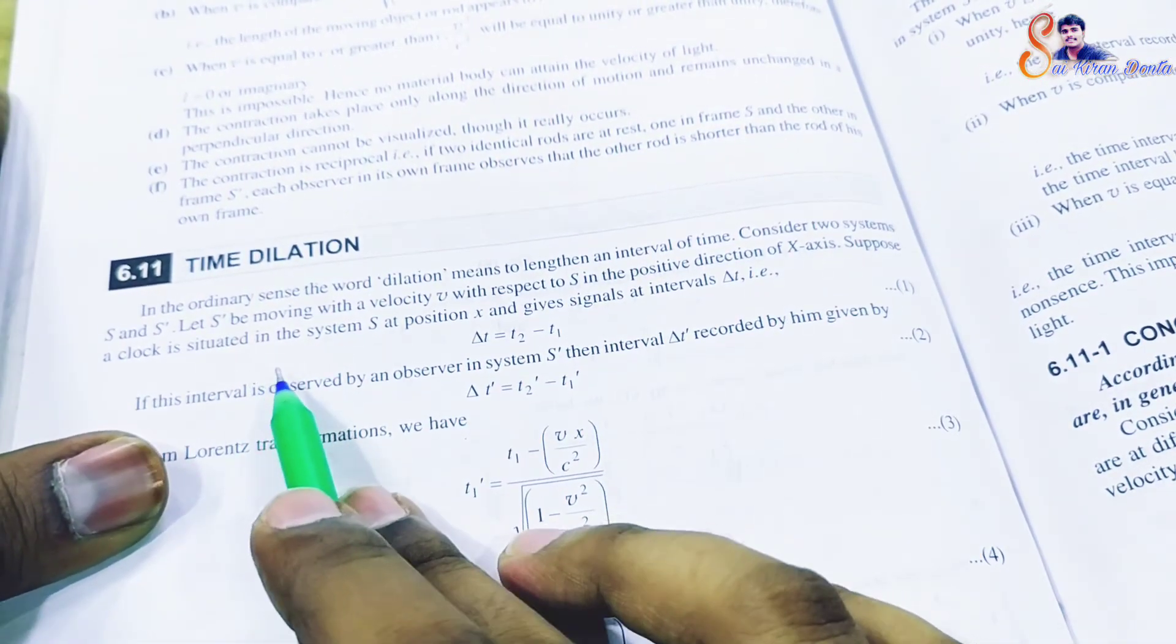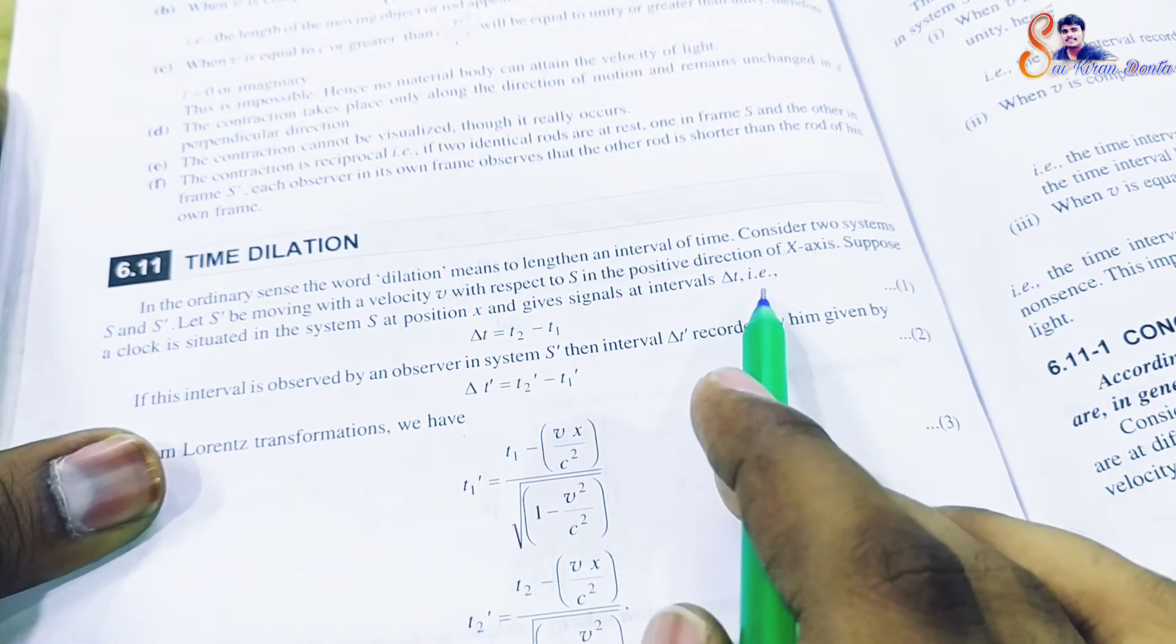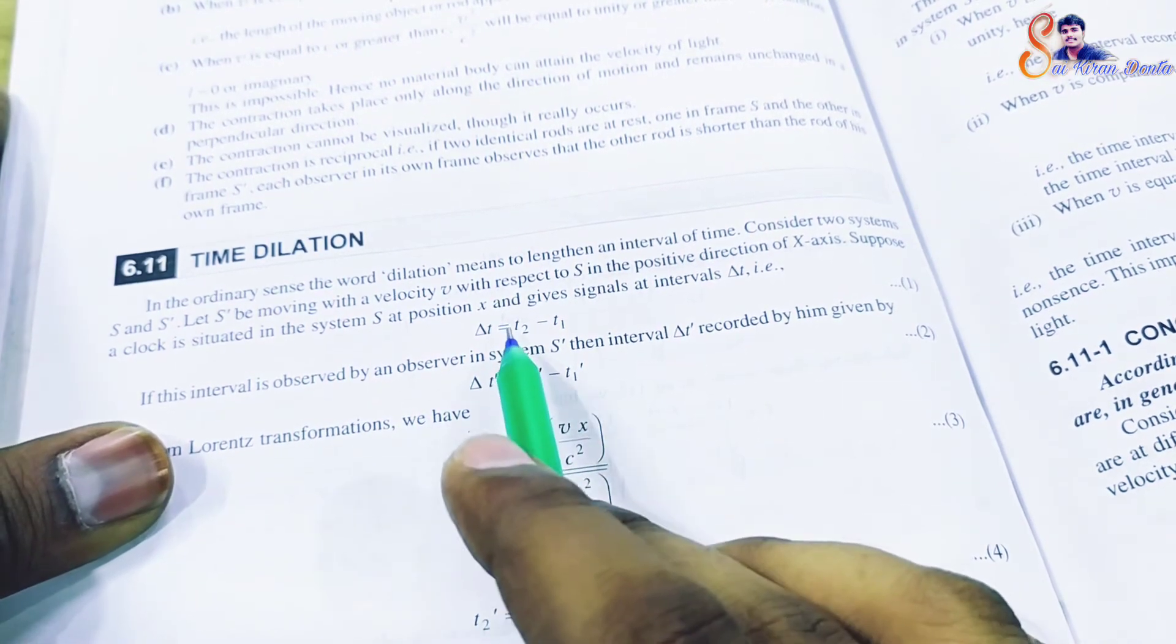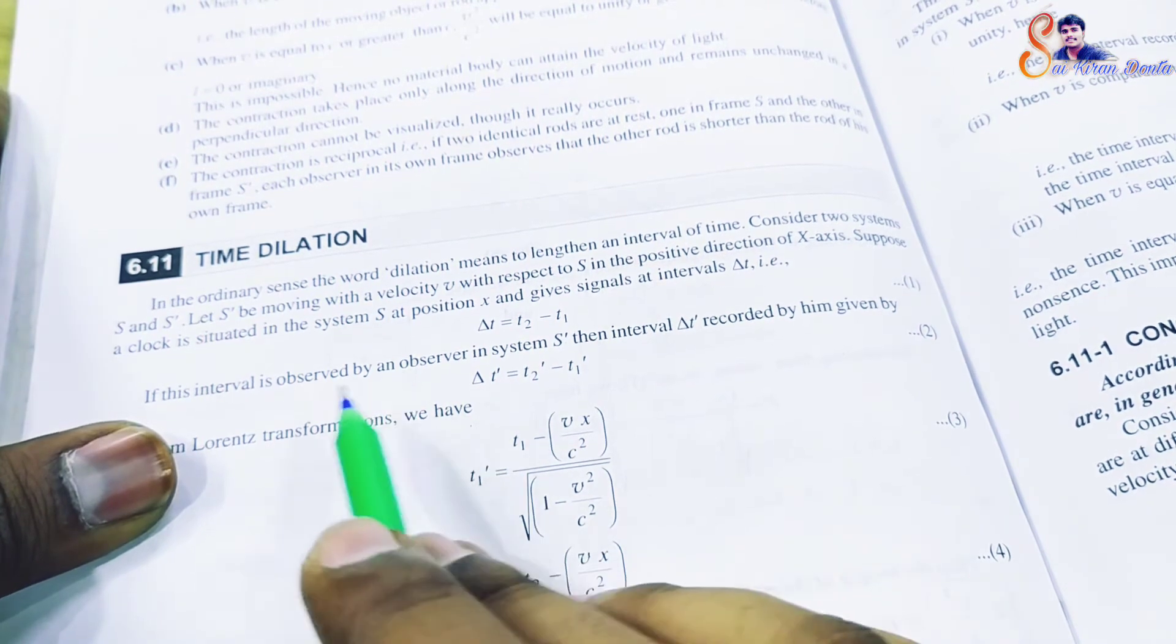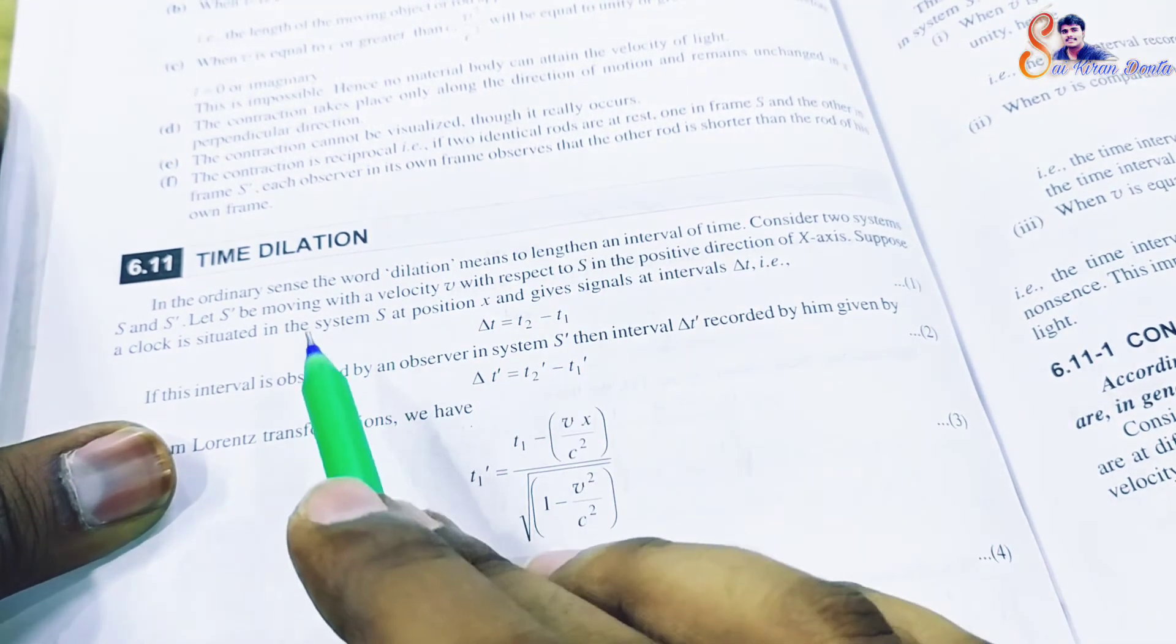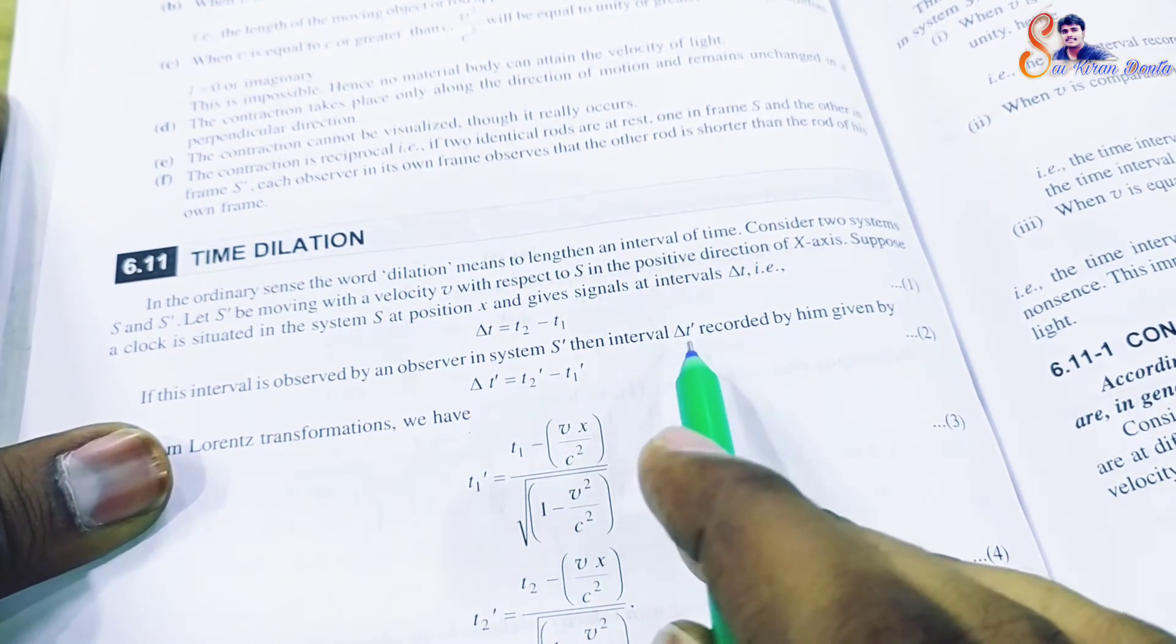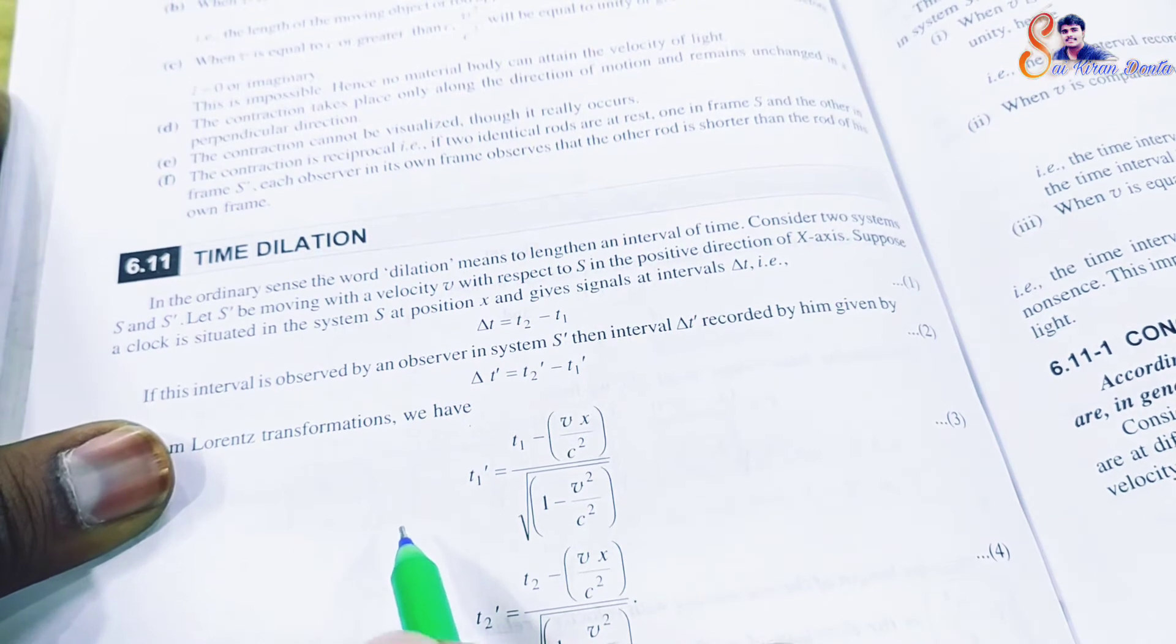Suppose a clock is situated in system S at position x and gives a signal at intervals delta t, which is t2 minus t1. In system S dash, the time interval delta t dash is given by t2 dash minus t1 dash.